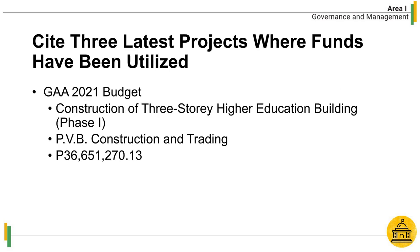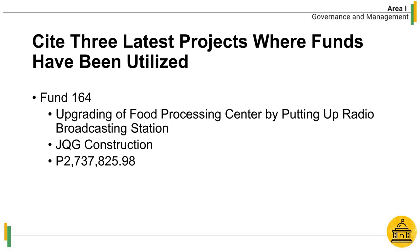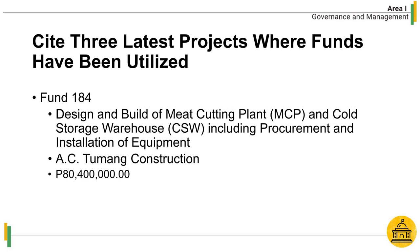As a result of the bidding process, PSAU awarded a project for the construction of a three-story higher education building, Phase 1, to PVB Construction and Trading amounting to ₱36,651,270.13 out of the GAA 2021 budget. PSAU also bid out and awarded a contract for the upgrading of a food processing center by putting up a radio broadcasting station amounting to ₱2,737,825.98 out of Fund 164. Additionally, PSAU awarded a contract for the design and build of a meat-cutting plant and cold storage warehouse, including procurement and installation of equipment, amounting to ₱80,400,000 out of Fund 184.